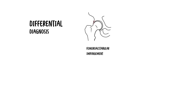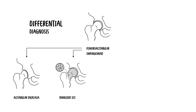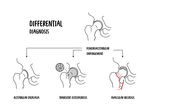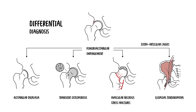Differential diagnosis for groin-type pain with a similar presentation includes acetabular dysplasia, transient osteoporosis of the hip, avascular necrosis, stress fracture, and extra-articular causes of hip pain such as iliopsoas tendinopathy or athletic pubalgia. A careful history and appropriate imaging help differentiate these entities, and MRI is particularly useful in this regard.